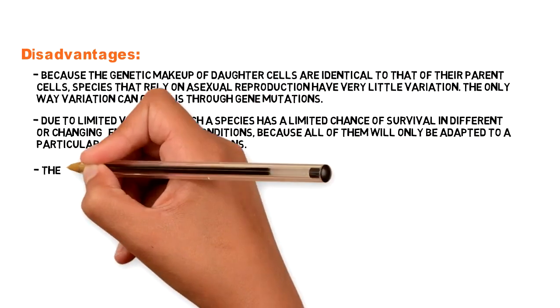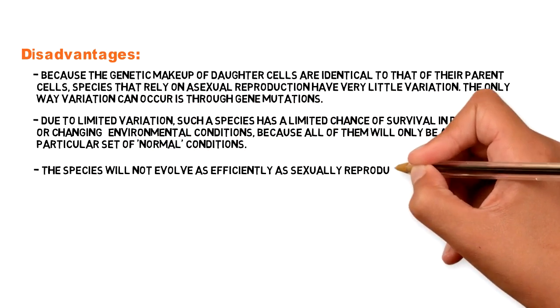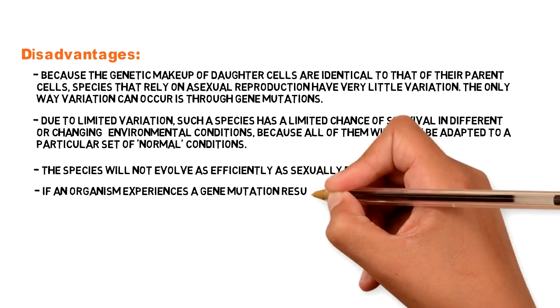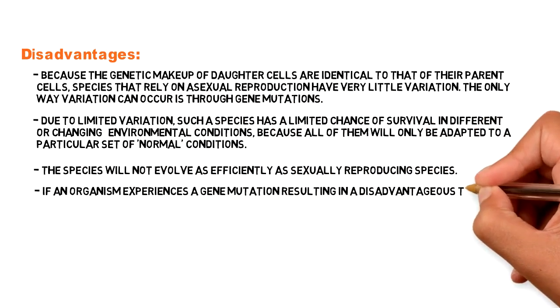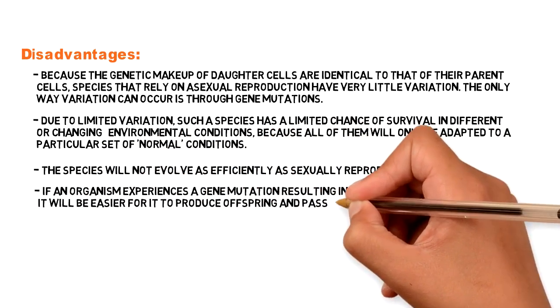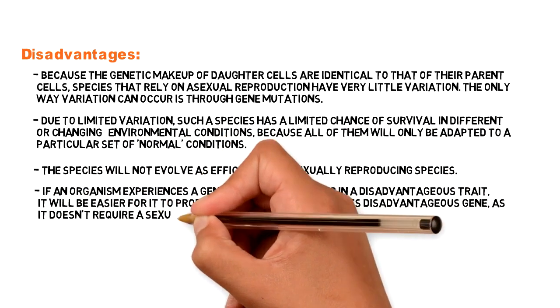The species will not evolve as efficiently as sexually reproducing species. If an organism experiences a gene mutation resulting in a disadvantageous trait, it will be easier for it to produce offspring and pass on its disadvantageous gene, as it doesn't require a sexual partner.